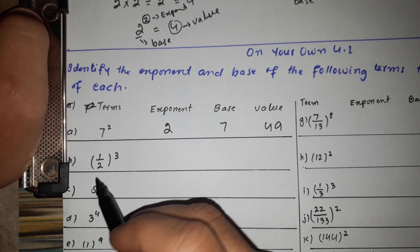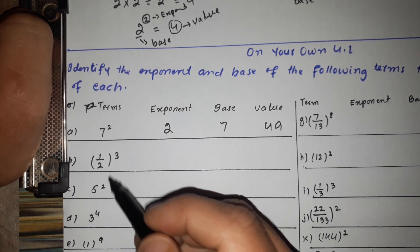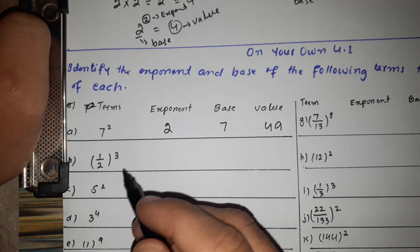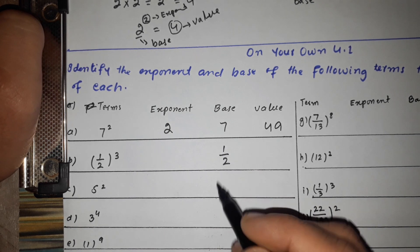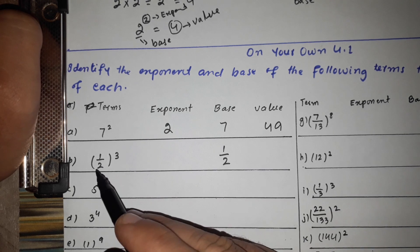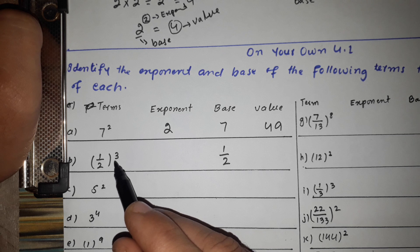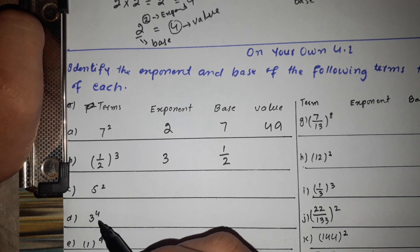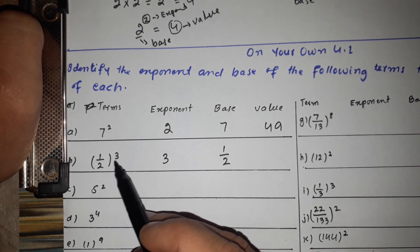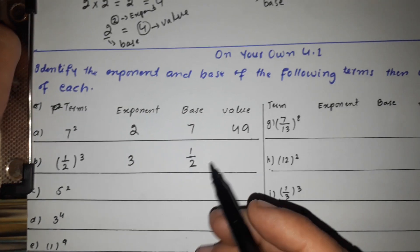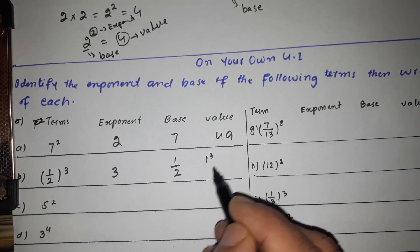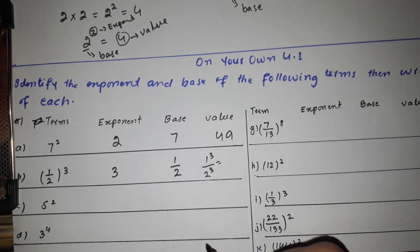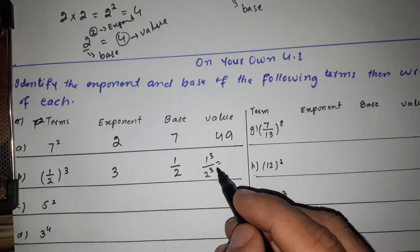Part B. The base is 1 and the exponent is 3. If the base is 1, then the value is 1, because 1 multiplied by itself any number of times is still 1. So the value is 1.